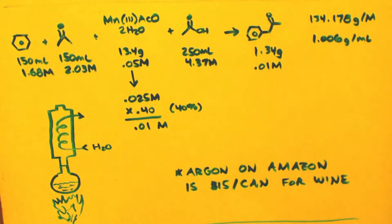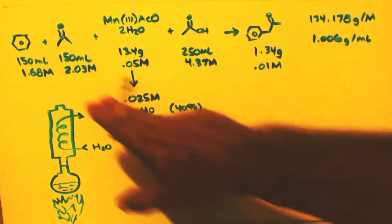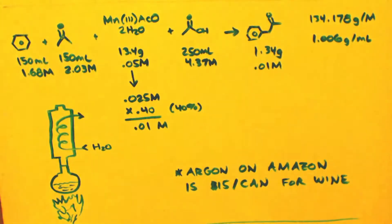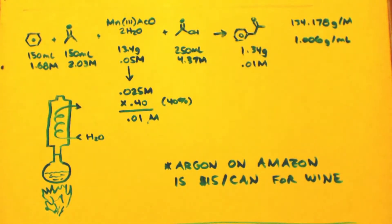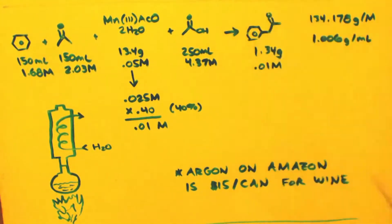As you can see I have the chemicals and the milliliters that you need or grams and the moles. 150 milliliters of benzene, that's 1.68 moles. 150 milliliters of acetone, 2.03 moles. 13.4 grams, that's 0.05 moles - this is the dihydrate salt manganese(III) acetate. 250 milliliters of acetic acid, 4.37 moles. And P2P you get would be 1.34 grams, which would be 0.01 moles.